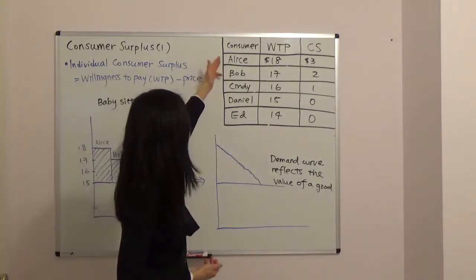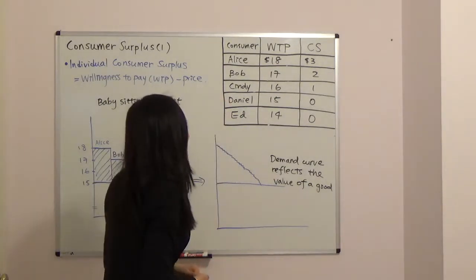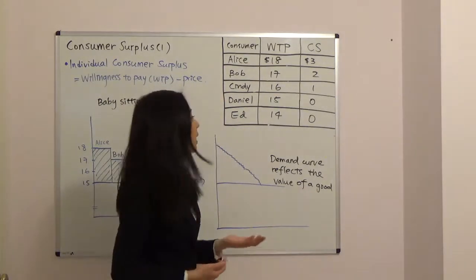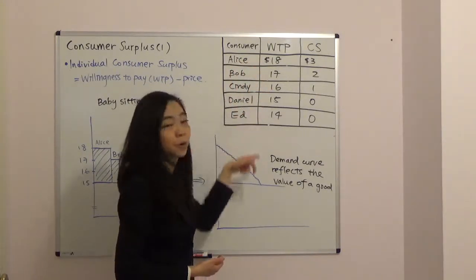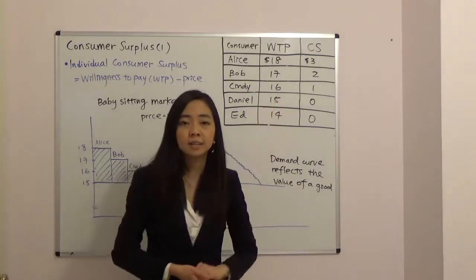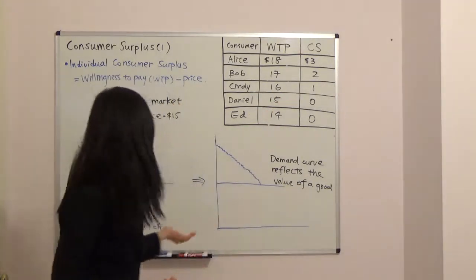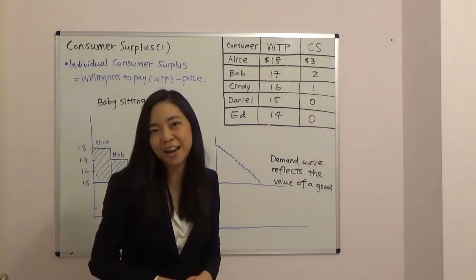And suppose the current price for babysitting is fifteen dollars per hour. And we have consumers Alice, Bob, Cindy, Daniel and Ed in this small market. And their willingness to pay is eighteen dollars for Alice and seventeen for Bob and so on and so forth. So you can see as long as your willingness to pay is greater than or equal to the price, fifteen dollars, then you will go ahead and hire the nanny.